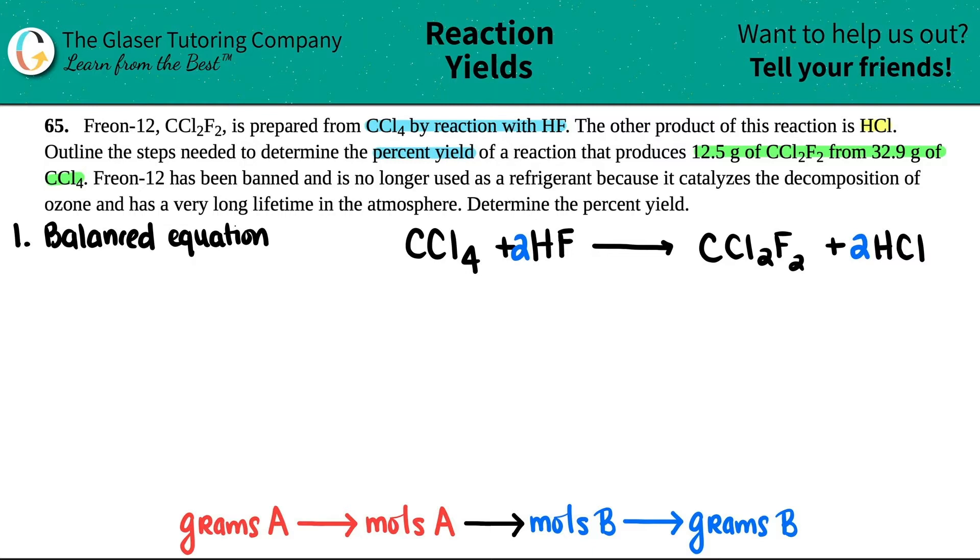Second thing what I would do, me personally, is list what you got, just to kind of keep everything organized. So they told us that we used 32.9 grams of CCl4, so that's my starting material. And it told us that we actually produced - there was an actual reaction, and it produced 12.5 grams.